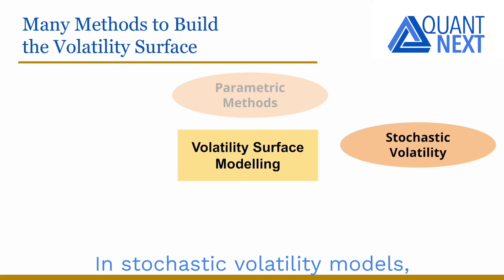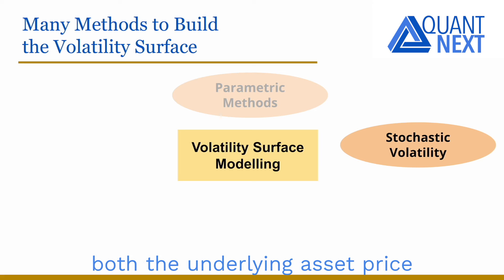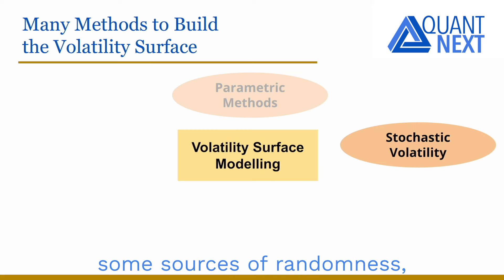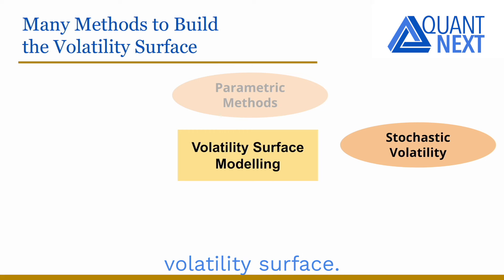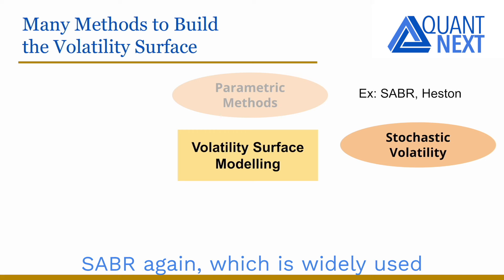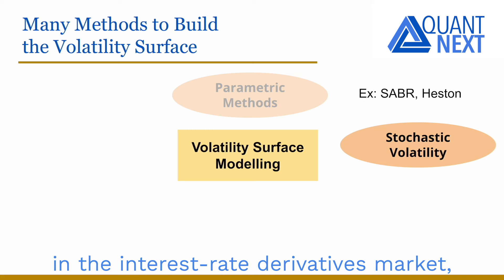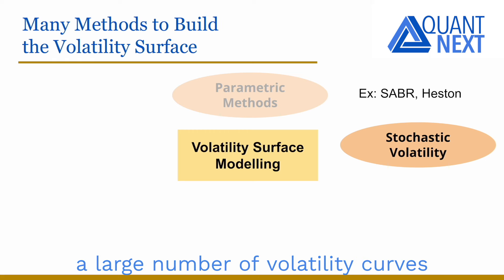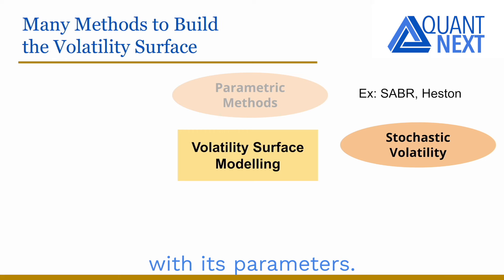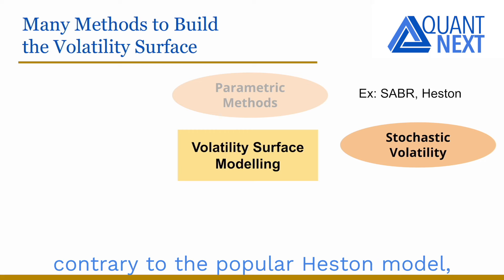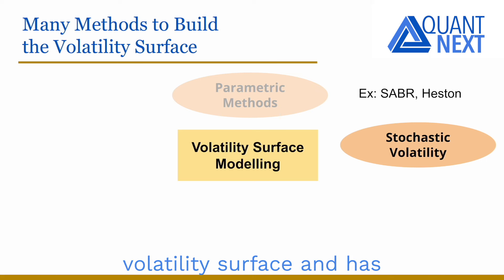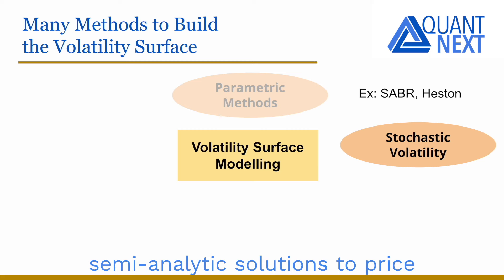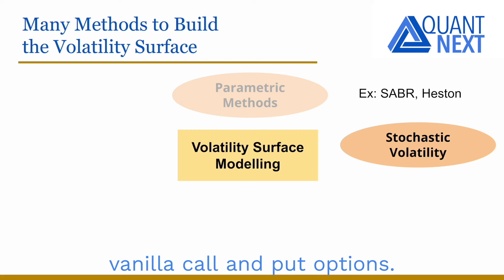In stochastic volatility models, both the underlying asset price and its volatility have some sources of randomness, creating a non-constant volatility surface. SABR, which is widely used in the interest rate derivatives market, allows fitting a large number of volatility curves with its parameters. But it doesn't allow controlling the term structure of volatility, contrary to the popular Heston model, which can be used to build the whole volatility surface and has semi-analytic solutions to price vanilla calls and puts options.